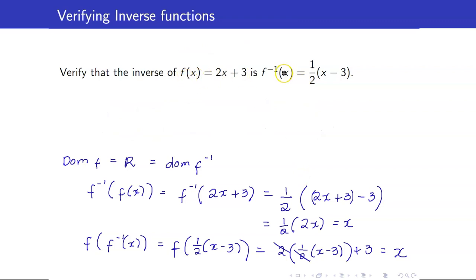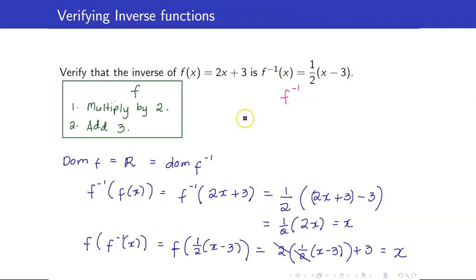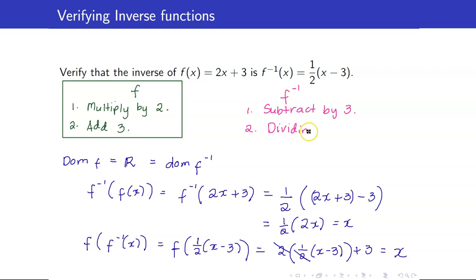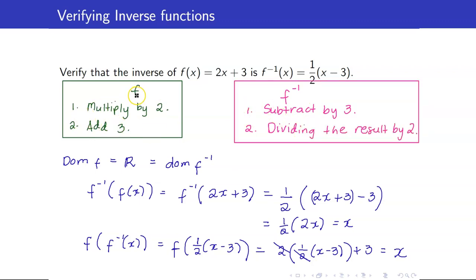I want to show that f and f inverse really undo each other. For f of x equals 2x plus 3, you multiply the input x by 2 and then add 3. For f inverse, by order of operations you subtract 3 first — the opposite of adding 3 — and then divide by 2 — the opposite of multiplying by 2. So f inverse undoes addition of 3 by subtracting 3, and undoes multiplication by 2 by dividing by 2.